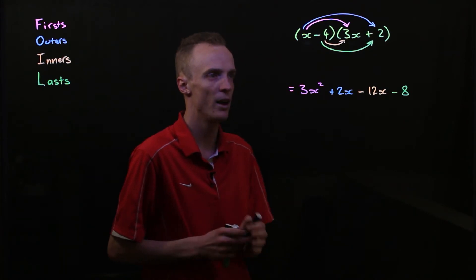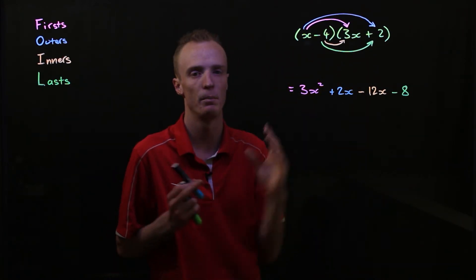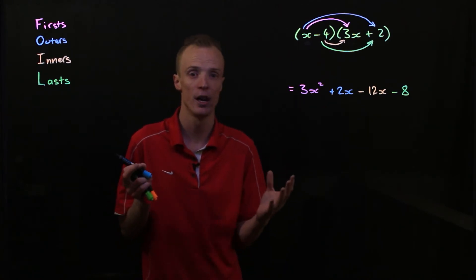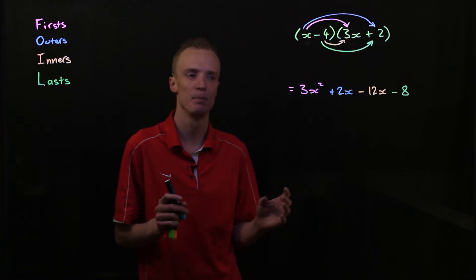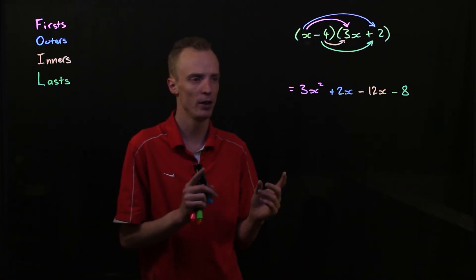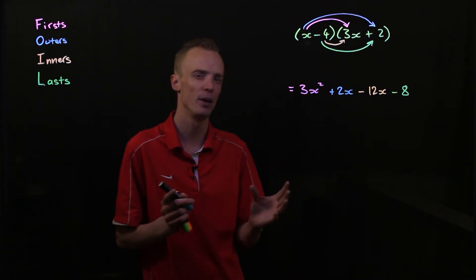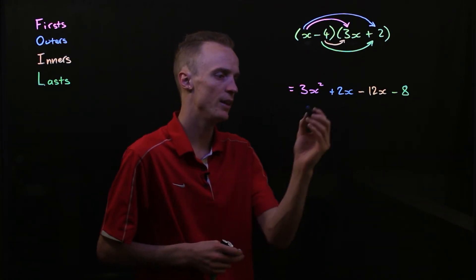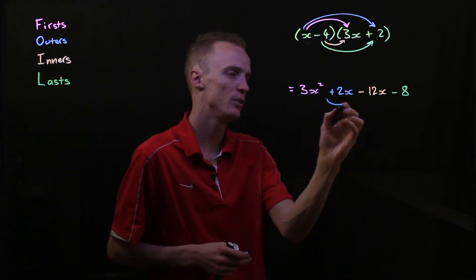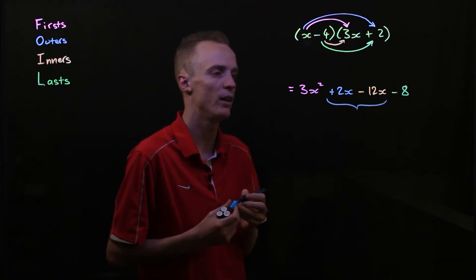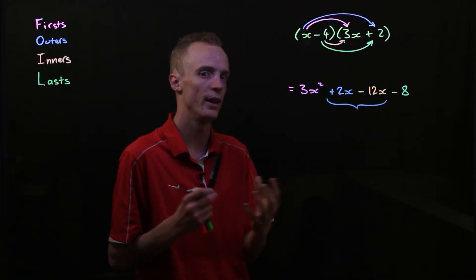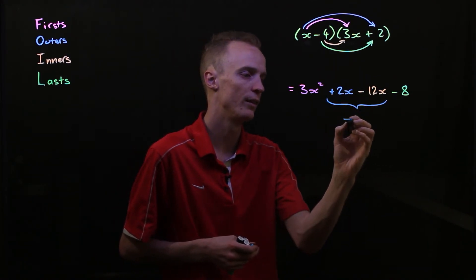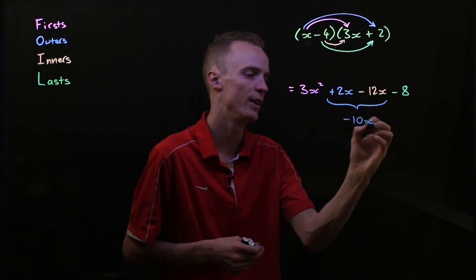Now from here, I have successfully expanded the brackets. But what we should always do, whether the question asks us to do it or not, is to simplify it as much as we can. So we should be looking for like terms here to see whether we can collect them together and simplify. In this case here, I can see that this plus 2x and this subtract 12x are like terms, so I should collect them together. So plus 2 minus 12 will be negative 10. So I have negative 10 of these x's.